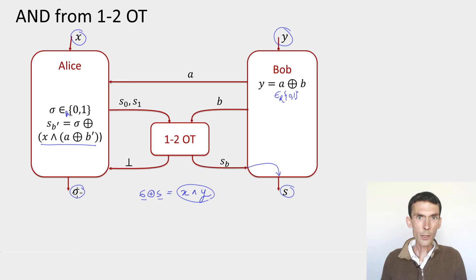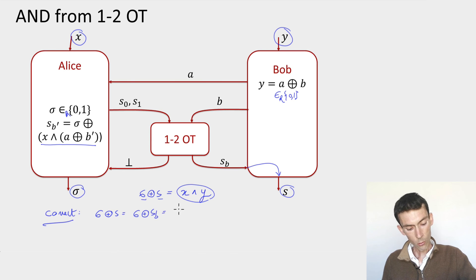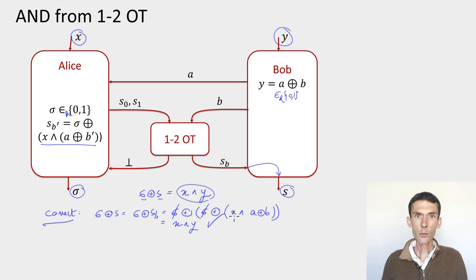To understand why this works, let's first see that it's correct. Well, by definition, sigma plus Bob's output is equal to sigma plus Sb. Now, what is Sb by definition? It's sigma plus X and A plus B. The sigmas cancel out. And A plus B by Bob's choice is equal to Y. So we get X and Y. Correctness works as long as the parties follow the protocol.